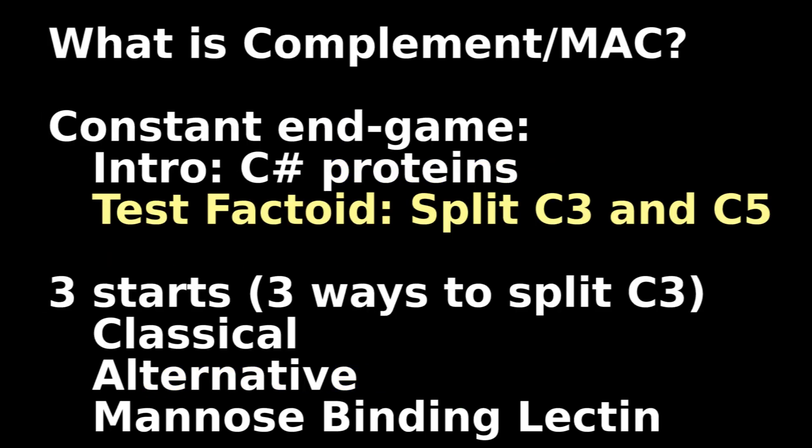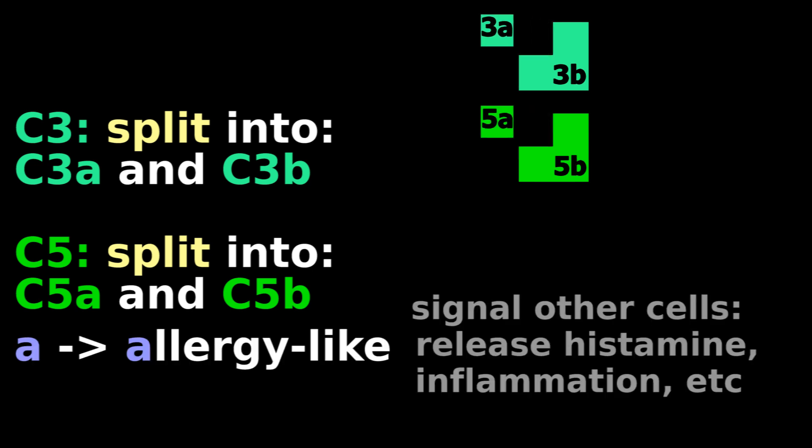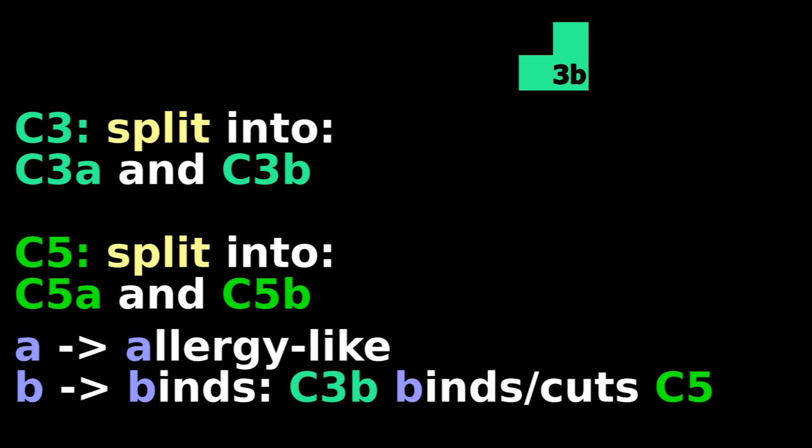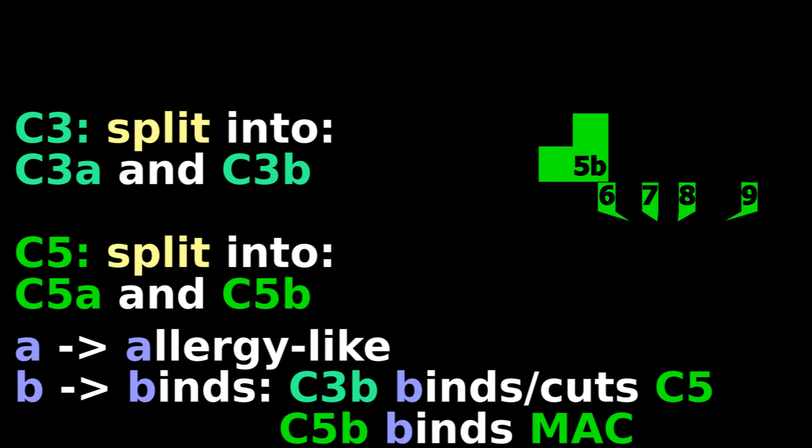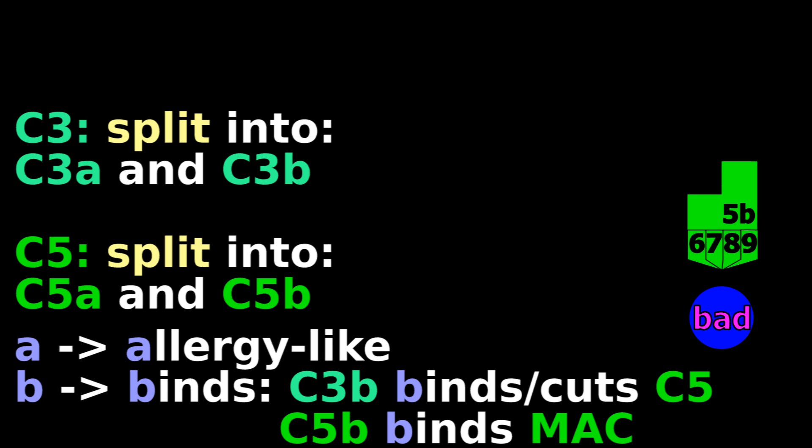Now for the frequently tested factoid. C3 and C5 are split into A and B parts. The A parts signal allergy-like responses. The B parts bind. C3B binds to C5. When C3B binds, it cuts C5 into C5A and C5B. C5B binds to C6, 7, 8, and 9, becoming part of the membrane attack complex.